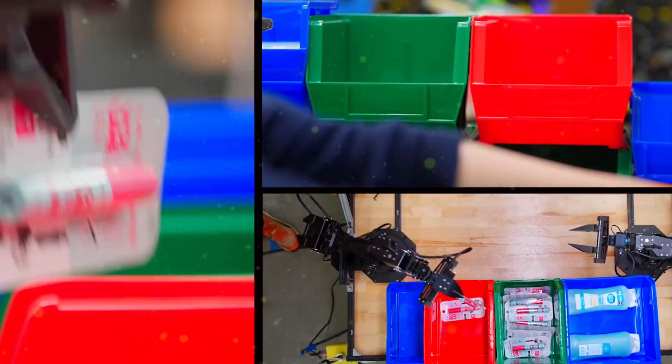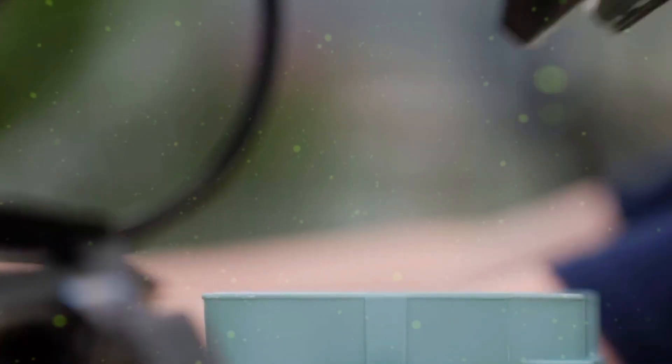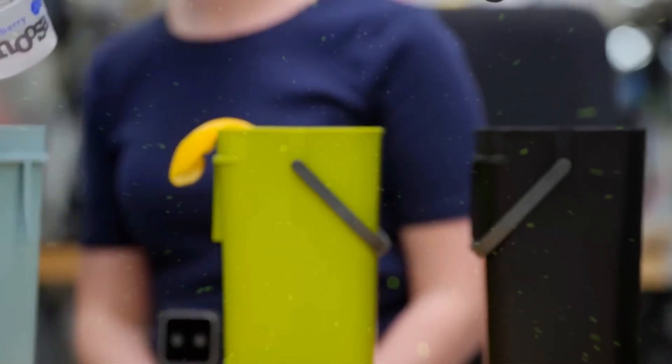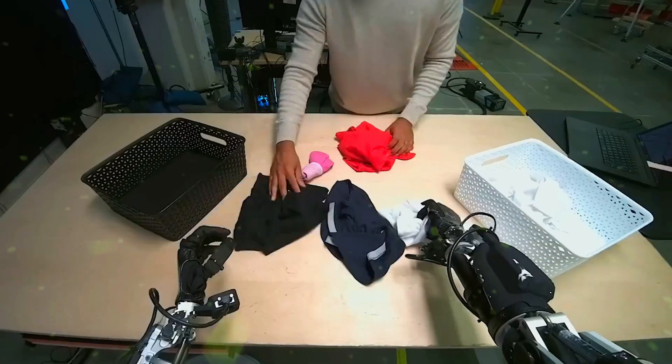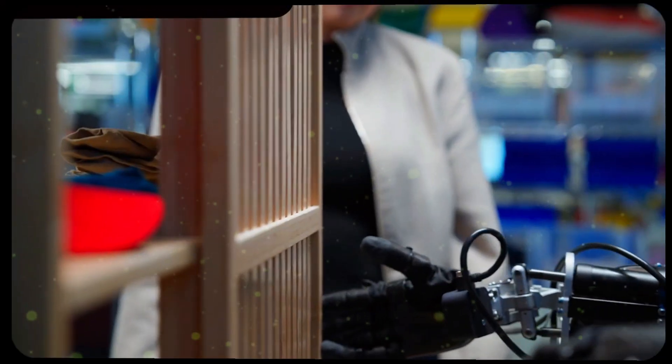Packing your suitcase tomorrow. Maybe even cooking dinner the day after. Robots that don't just follow commands, but think while they work. Gemini Robotics 1.5 isn't just another upgrade. It's a full-on leap toward general-purpose machines that feel less like tools and more like partners. The future just showed up in your laundry room, and honestly, it's unreal.